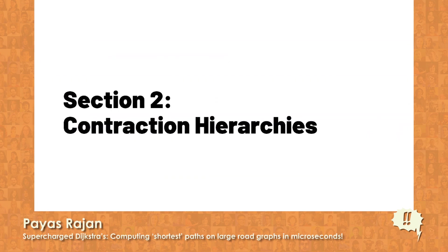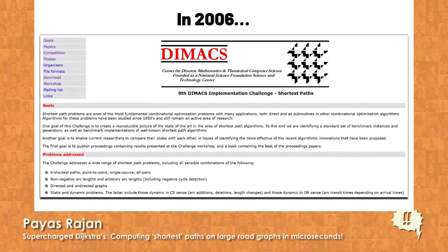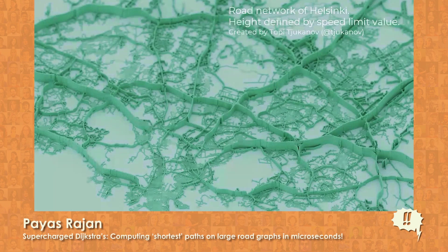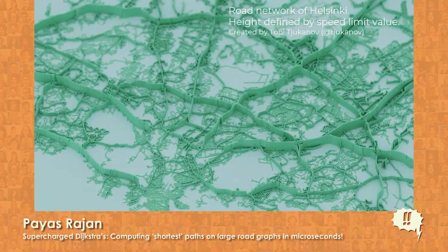Let's move to Contraction Hierarchies. In 2006, the Center for Discrete Mathematics and Theoretical Computer Science at Rutgers took up the shortest path problem as a challenge. Research groups submitted papers and produced a host of speedup techniques. One such technique is highway hierarchies. The key insight is that not all edges have the same importance in a road network — on one end are local edges with low weights connecting nearby vertices, and on the other end are highways with high edge weights connecting nodes farther apart.